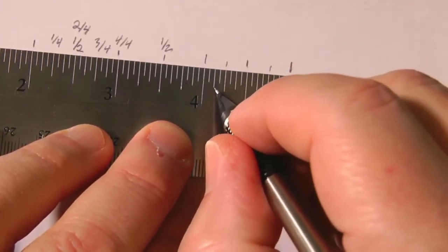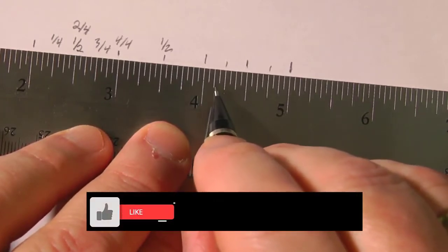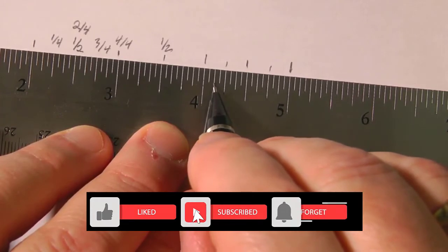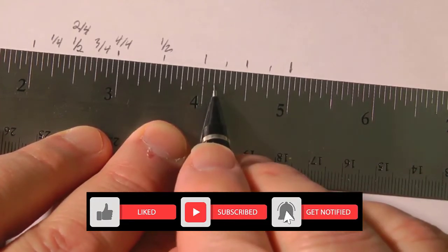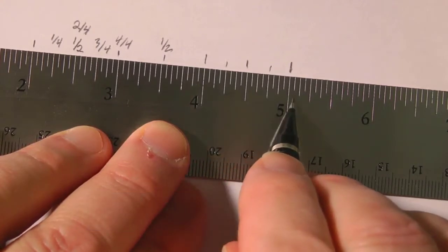In between those, we've got these even smaller lines. So here's the half is the longest, quarter, and this one here, between the quarter, that's an eighth. Because there are eight parts in between here. Just like in the quarters, we have one, two, three, four quarters.